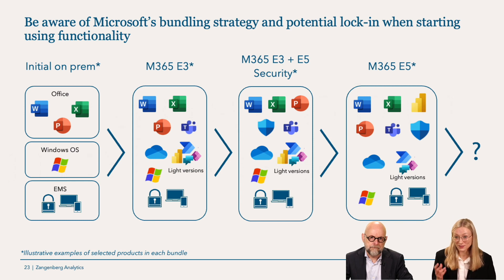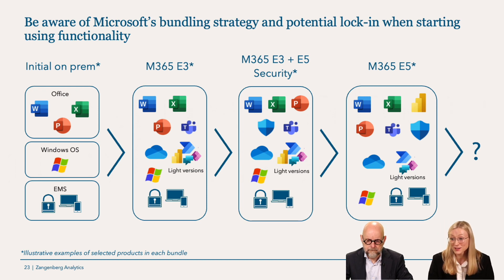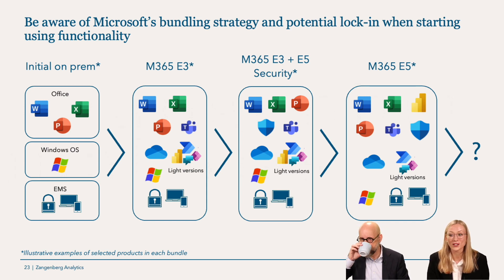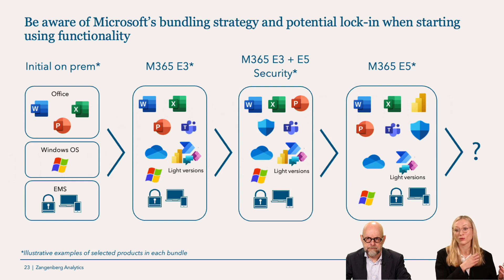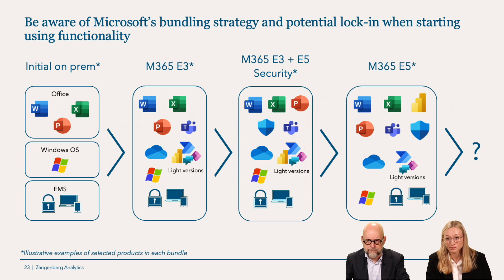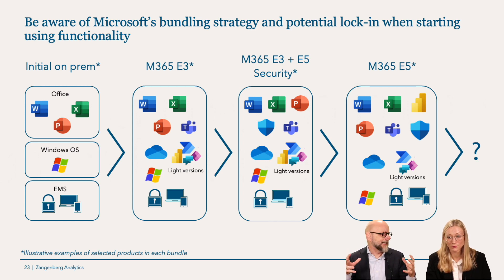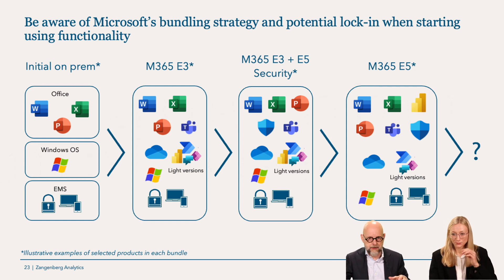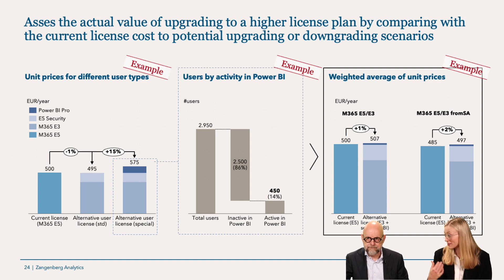Be aware of Microsoft's bundling strategy. They have E3, E5 licenses and potentially an E7 coming, and starting to use those functionalities increases lock-in. The bundles make it harder and harder to downgrade licenses. Note that E3 plus E5 Security is an in-between scenario that could in some situations be cheaper than full E5 — an alternative that's not very attractive to Microsoft.